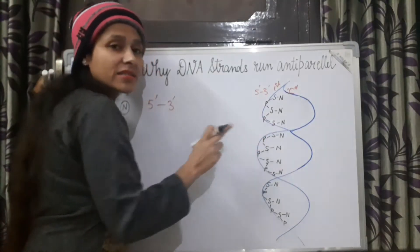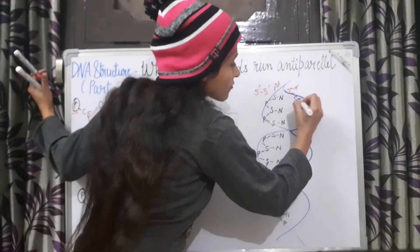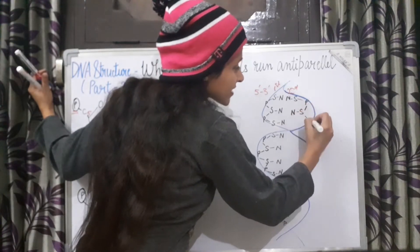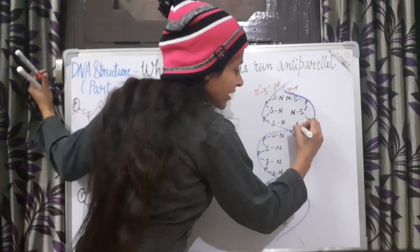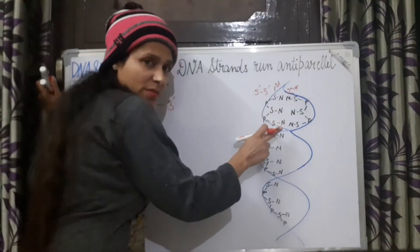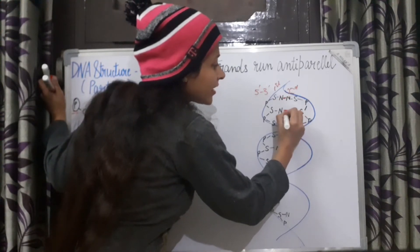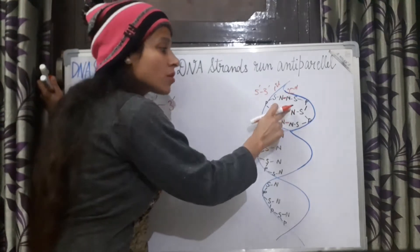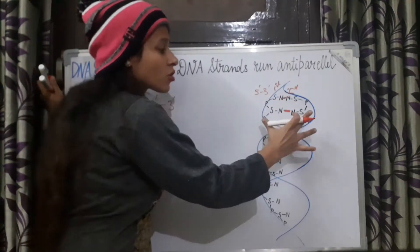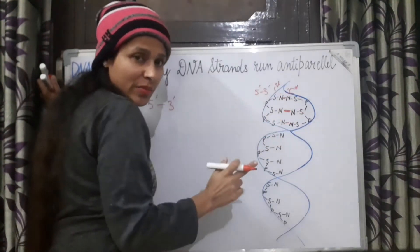Why is it anti-parallel? In the double helix model proposed by Watson and Crick, the second strand also has nucleotides with sugar, phosphate, and nitrogenous base. There is also a phosphodiester bond joining them. The nitrogenous bases of the two strands are joined together by hydrogen bonds, so our two DNA strands are joined by hydrogen bonds between the nitrogenous bases.